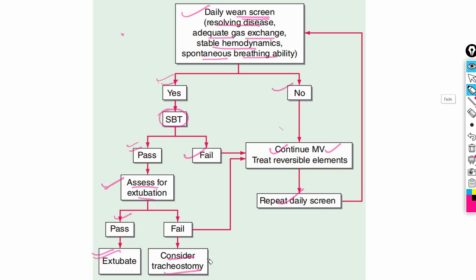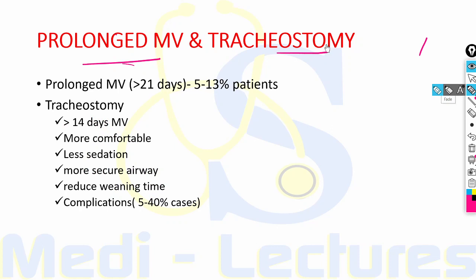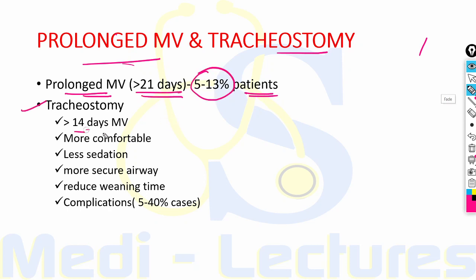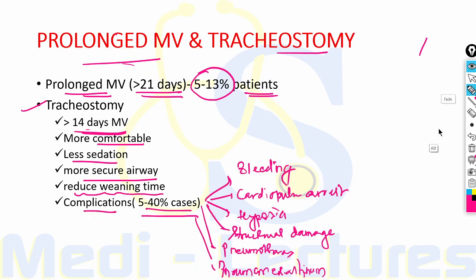Prolonged mechanical ventilation is defined as more than 21 days and occurs in 5-13% of ventilated patients. Tracheostomy is preferred if ventilation is required for more than 14 days — it is more comfortable, requires less sedation, provides a more secure airway, and reduces weaning time. However, complications occur in 5-40% of patients and can include bleeding, cardiopulmonary arrest, hypoxia, structural damage, pneumothorax, and pneumomediastinum. Long-term complications include tracheostomy granulation and erosion of the innominate artery.